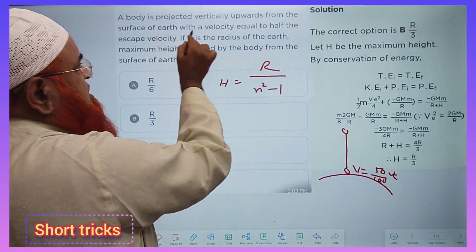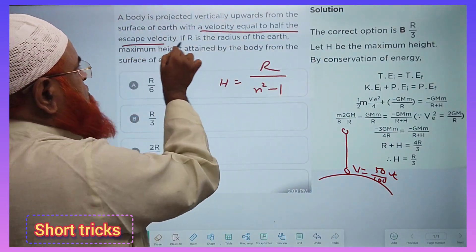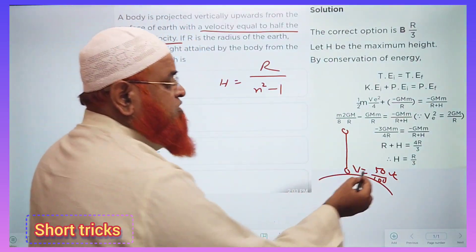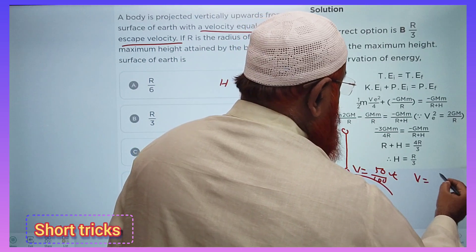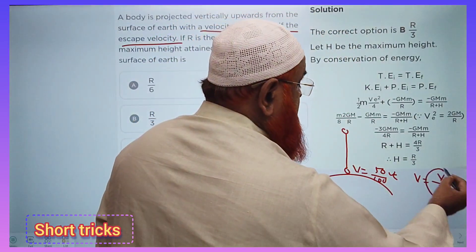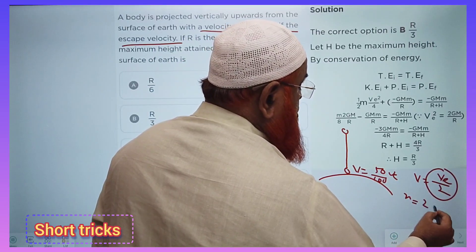If the velocity is equal to half of the escape velocity or 50% of the escape velocity, then what happens? What is the meaning here? 50% can be taken as half of the escape velocity. Let us imagine this half means let us take n equal to 2.